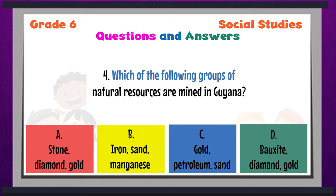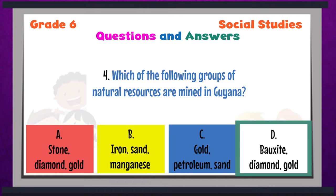Question 4: Which of the following groups of natural resources are mined in Guyana? A — stone, diamond, gold; B — iron, sand, manganese; C — gold, petroleum, sand; or D — bauxite, diamond, gold. The answer to question 4 is D: bauxite, diamond, and gold are natural resources that are mined in Guyana. Mining involves the use of machinery to get the mineral or resource from under the soil.